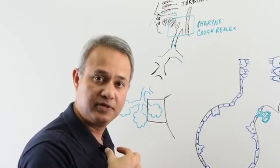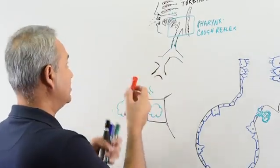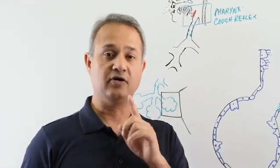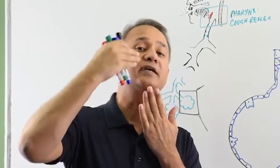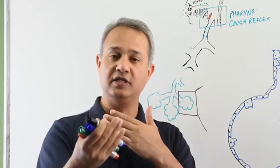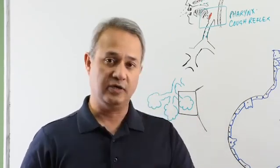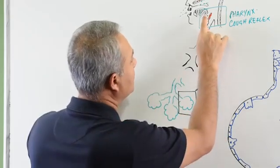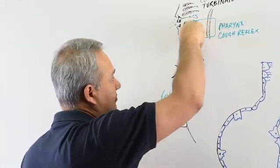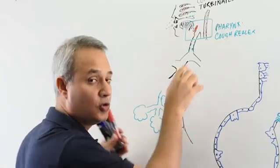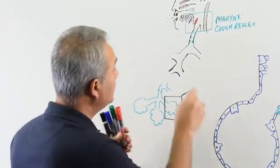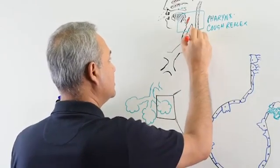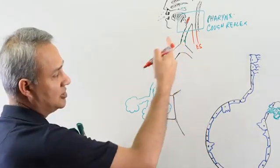Similarly, we have the epiglottic reflex. The epiglottis — when we are talking or breathing — is open, allowing air to flow through the trachea. When we swallow something, the epiglottis becomes horizontal, pulled by the hyoid bone, closing the passage to the trachea. This ensures food or water goes from the pharynx into the esophagus instead of entering the trachea.